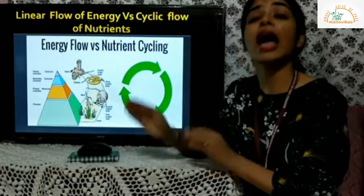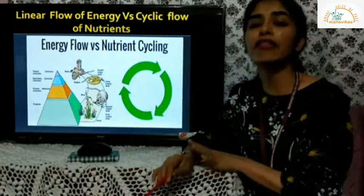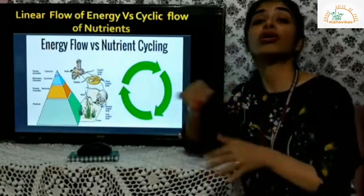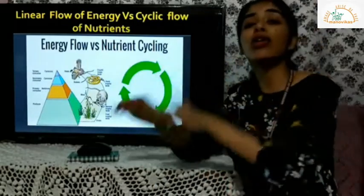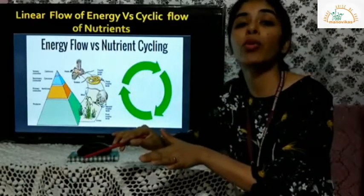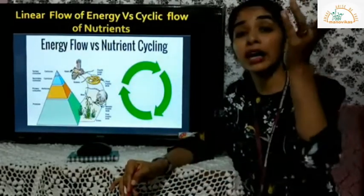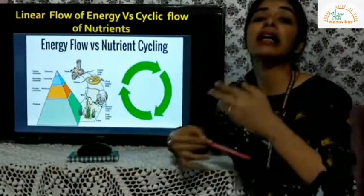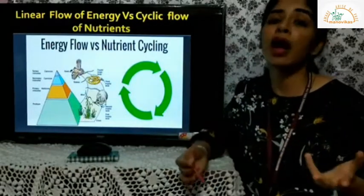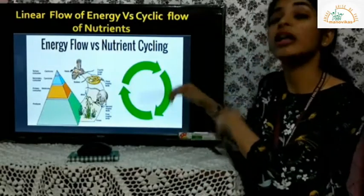As opposed to linear flow of energy, we have cyclic flow of nutrients. Here there is nutrient exchange or transfer between the living and the non-living components of the ecosystem — that is, between biotic and abiotic components. When we say abiotic, it's water, land or soil, and air. Nutrients flow in a cyclic motion between these non-living components and living components like plants, microorganisms, animals, and humans.